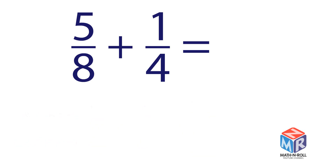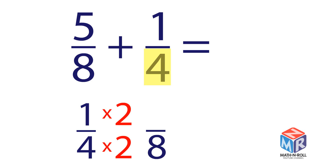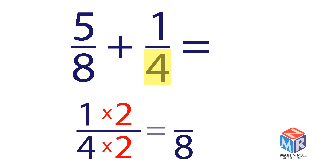What if we need to add fractions with unlike denominators? We would use the same strategy, but first we need to convert these fractions into fractions with like denominators. We take the fraction with the smaller denominator and multiply both parts, the numerator and the denominator, by 2. Thus, we found the equivalent fraction of 1 fourth. It is 2 eighths.